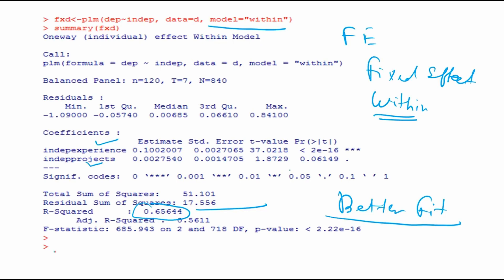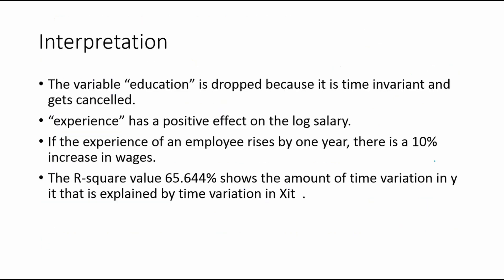I showed the earlier models for comparison — to empirically demonstrate that panel data models are a better fit to panel data than OLS models. Regarding interpretation: education is dropped because it does not change over time for a particular person, so when we take the average, it gets eliminated. Experience has a positive effect on log salary, and the R-square value confirms it is a good model.